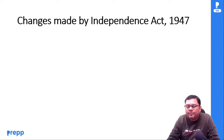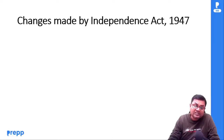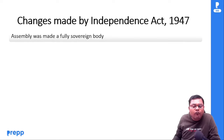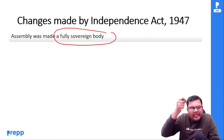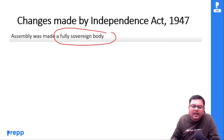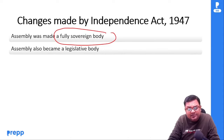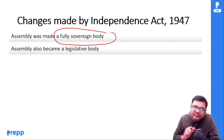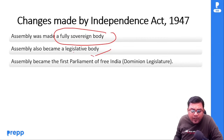15th August 1947 को भारत independent हो गया। Independence Act of 1947 ने काफी कुछ changes किये। सबसे पहले Constituent Assembly को fully sovereign body बना दिया — means आप जो चाहे वो constitution बना सकते हो, किसी भी internal या external authority का आपके उपर कोई control नहीं रहेगा। Assembly को dual functions दिये गए: पहला — constitution बनाना, और दूसरा — आप एक legislative body भी बन जाओगे क्योंकि कुछ ordinary laws भी बनाने होंगे। So Assembly became the first parliament of free India, और इसको Dominion legislature भी कहते हैं।